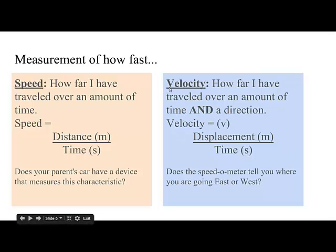On the other side, velocity is how far I've traveled over an amount of time and includes a direction. Velocity is usually represented with a lowercase v, or scripted v. Velocity is different because it is a displacement, a distance with a direction, divided by time. Pay attention to your parent's speedometer. Does it ever tell you that you're going east or west? I don't think so.